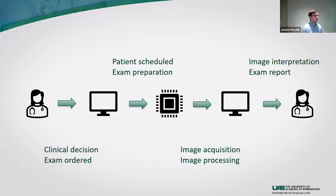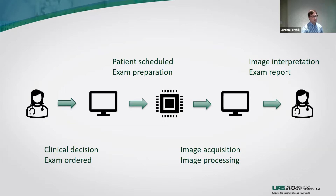Beyond the images themselves, there are dozens of steps involved in the imaging process before we even get to the images. In many ways, our studies start not in the radiology department but in the exam room where a patient sees their primary provider. The provider does their decision-making, orders the exam, and then it comes to the nuclear medicine department where the patient is scheduled — possibly requiring preparation such as stopping medications or following a certain diet. Once the patient arrives, images are acquired and processed, and only then does the radiologist provide interpretation and upload the report to the electronic health record.